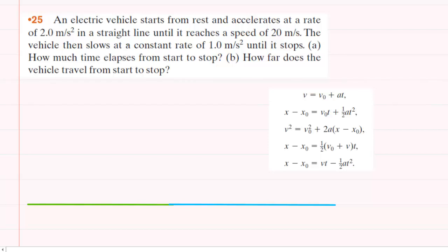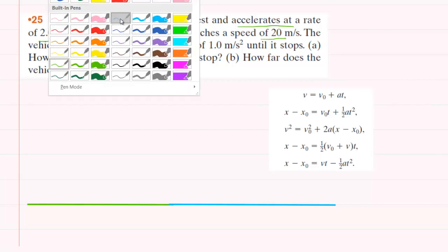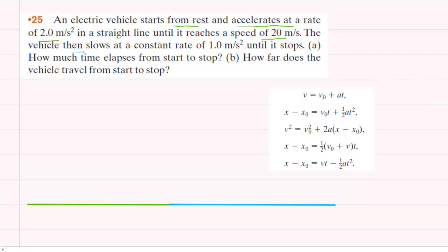In this question, the electric vehicle has two different portions of its motion. In the first portion, it's starting from rest and accelerating at a rate of 2 meters per second squared until it reaches a speed of 20 meters per second. Then, during the next portion of its motion, it slows down at a constant rate of 1 meters per second squared until it stops.